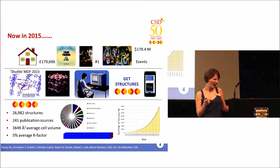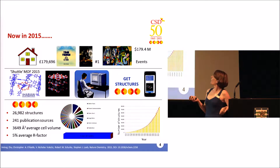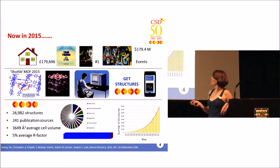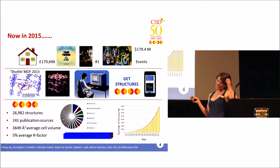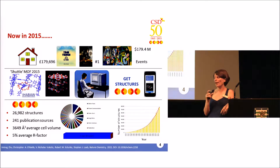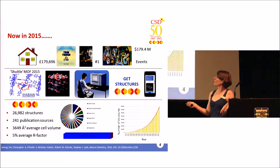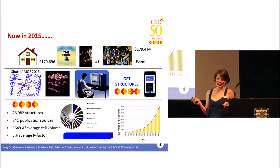I'm going to make sure you're all awake by asking you to do something for me. Get your mobiles, tablet devices, or computers out, and if you've got internet access, Google 'GetStructures' — the top hit takes you to the CCDC page. On the CCDC page you'll see three boxes, and in the third box you can enter a ref code. We're going to see lots of ref codes during this talk, and the first one to enter and visualize is IHABAW. Play along with me — there might be a prize for the person who views the most structures.